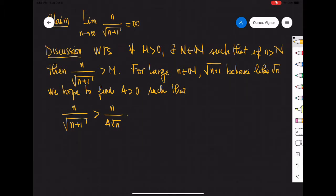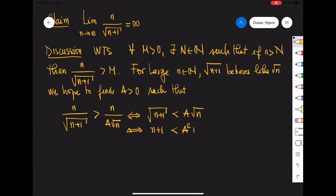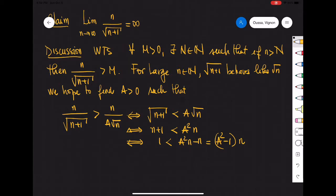Notice that this statement is equivalent to square root of n plus 1 being strictly less than a times square root of n. Squaring each side, we get n plus 1 is less than a squared times n, which is the same as 1 is less than (a squared minus 1) times n.